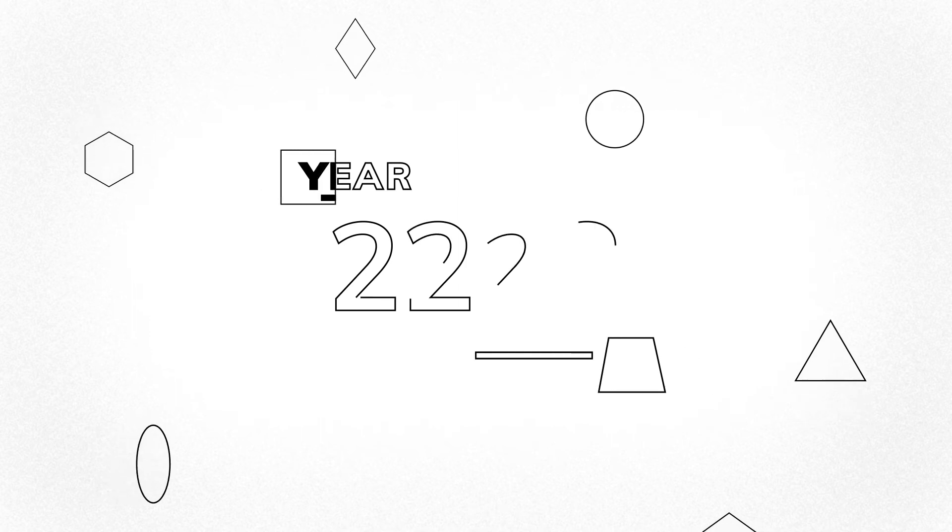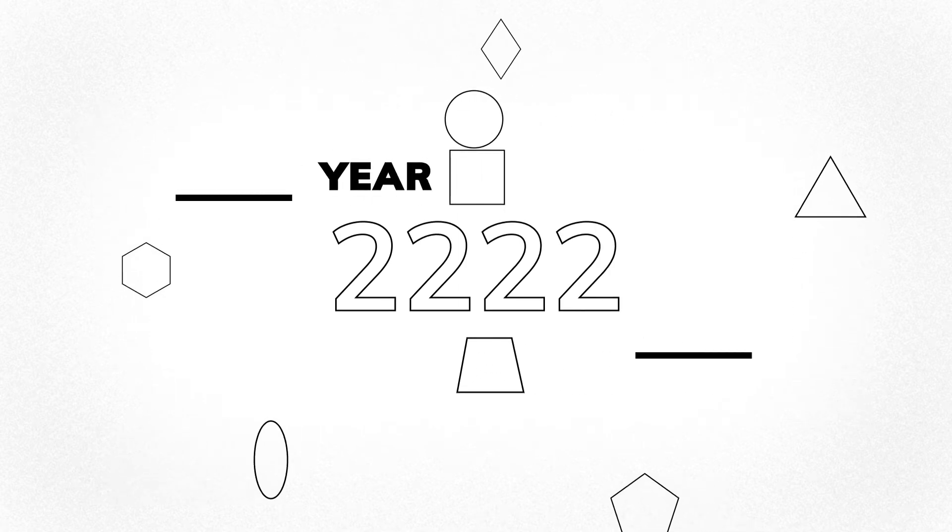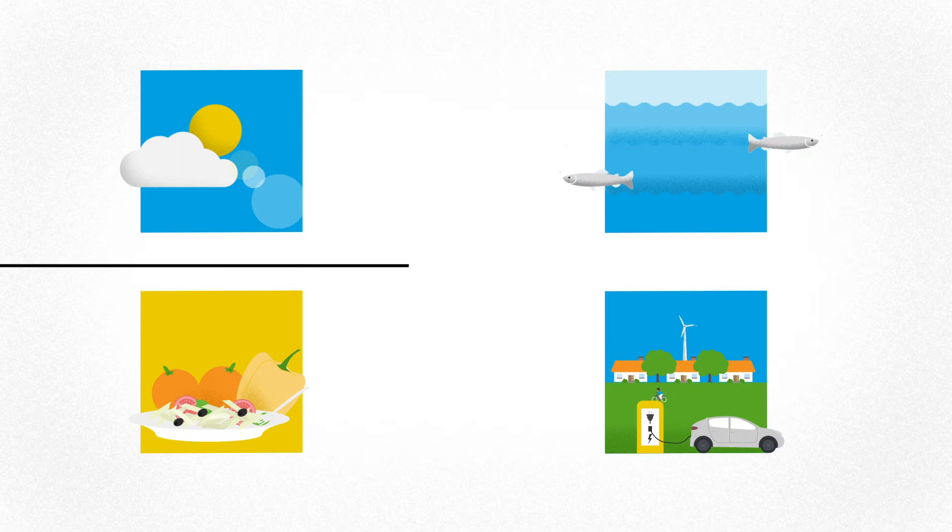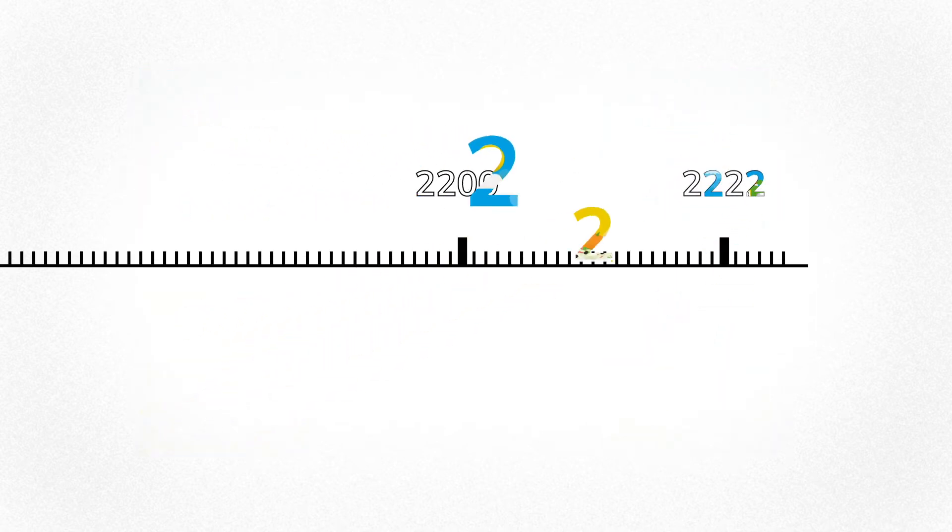Here is a riddle for you. The year is 2,222. The sky is blue. The oceans are clean. Nobody's going hungry. Nobody's burning fossil fuels. How did we get here? Confused? Let's work it out.